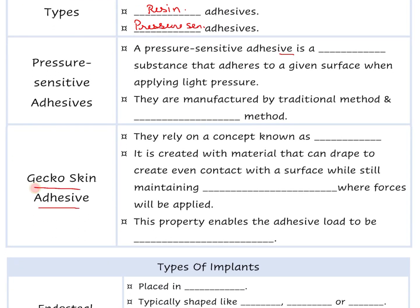Gecko skin adhesives are another type - the gecko is an animal like a lizard with very sticky feet. They rely on the concept of draping adhesion, creating highly elastic stiffness in different directions - a rubbery kind of adhesion. This property enables the adhesive load to be evenly distributed across the surface rather than concentrated in one area.